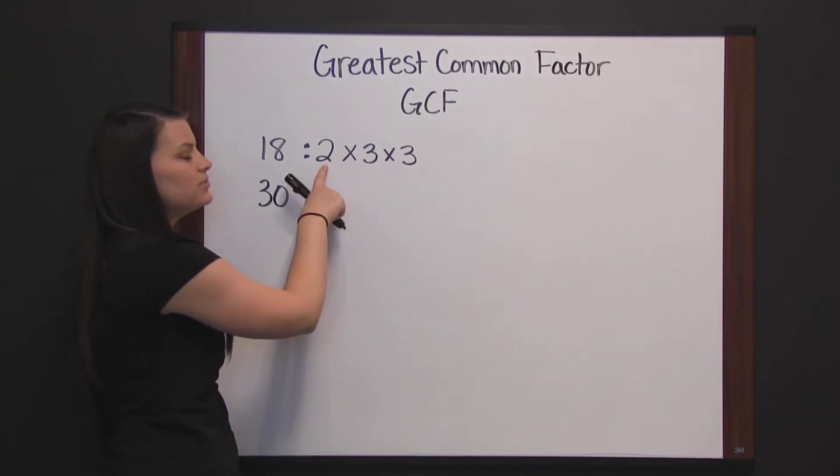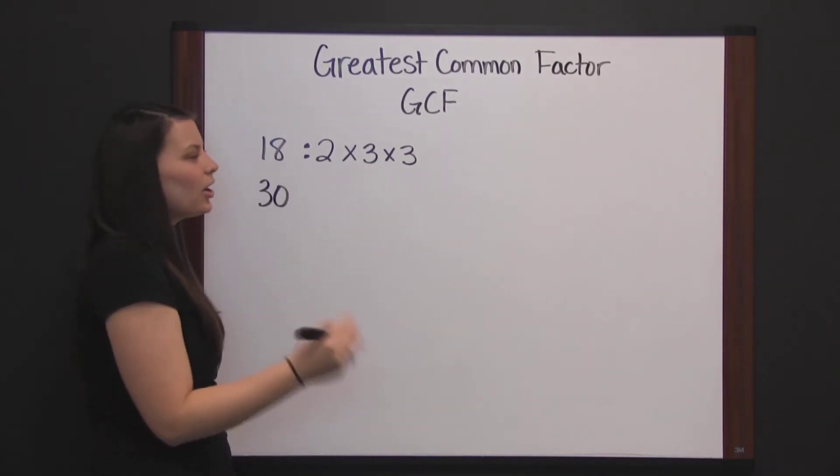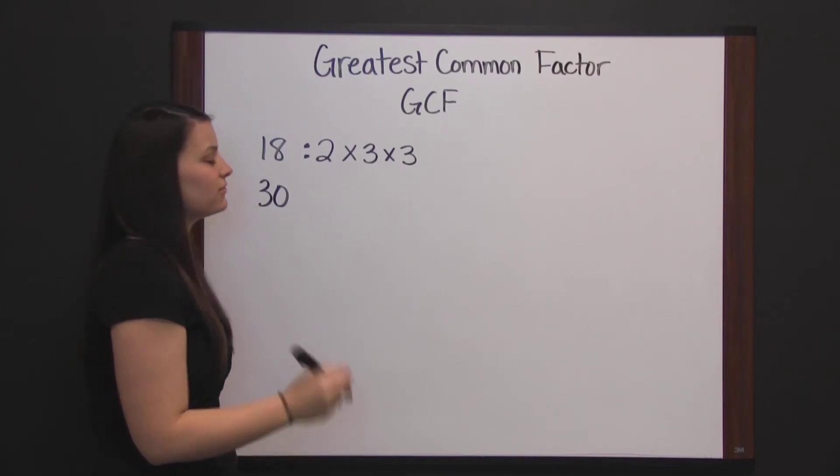Three times three is nine, times two is eighteen. I always like to check after I've factored to make sure I've got it.